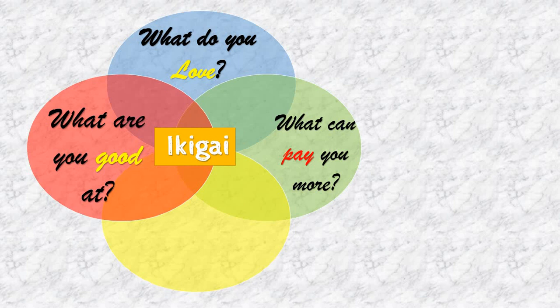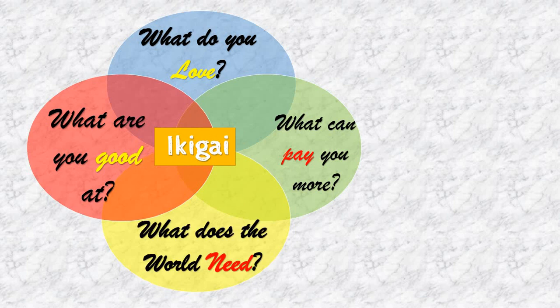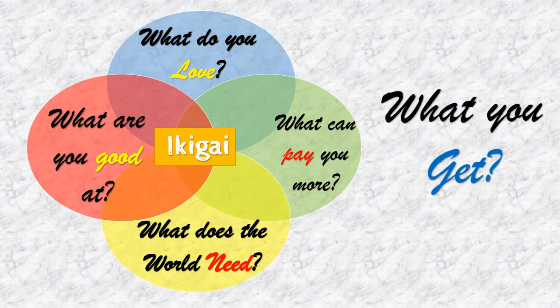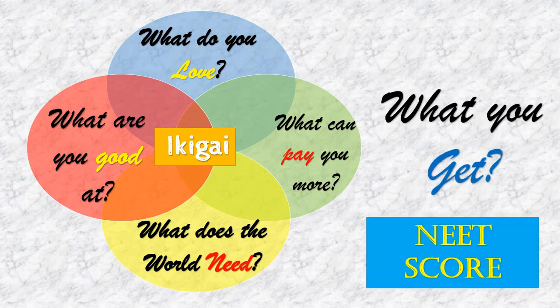The fourth component is what the world needs. Many of us opt for jobs that fit their spouse's profession or family profession, but the Ikigai concept is for yourself. After you arrive at the balance in your choice, what ultimately decides your choice is what score you get, and this is purely based on the NEET score.